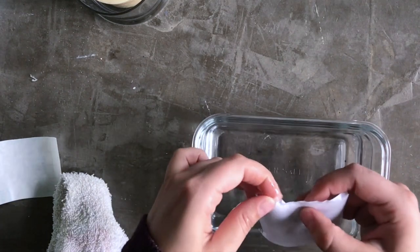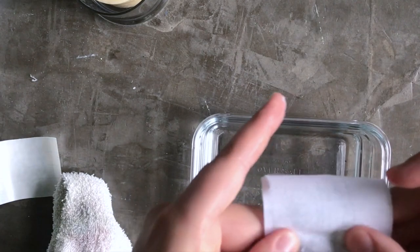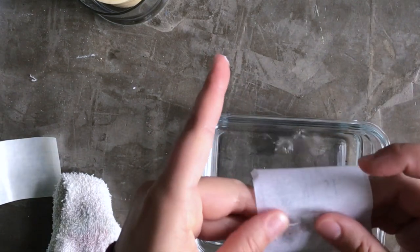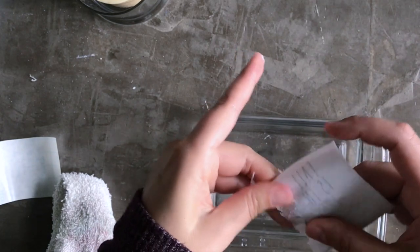But eventually what's going to happen is the paper, see it's starting to tear. And as you just rub with your fingers very gently and take your time on this, just very gently rub away at that white paper.